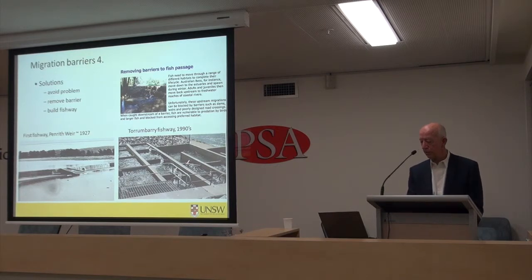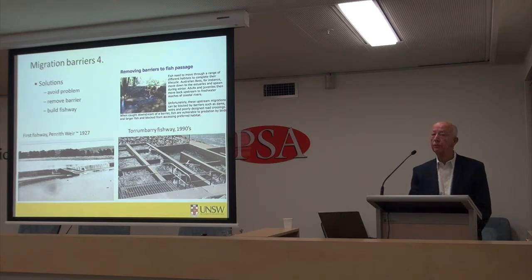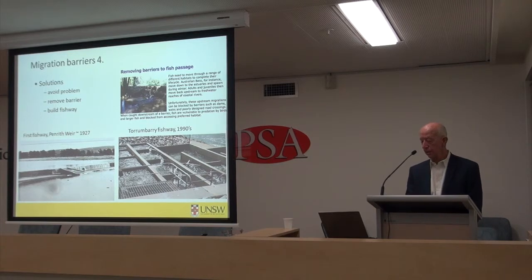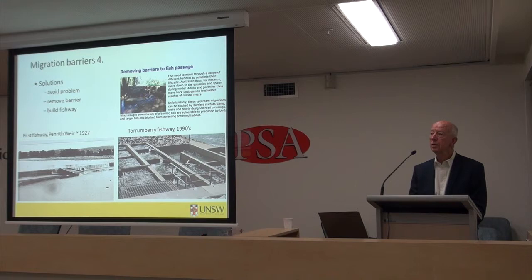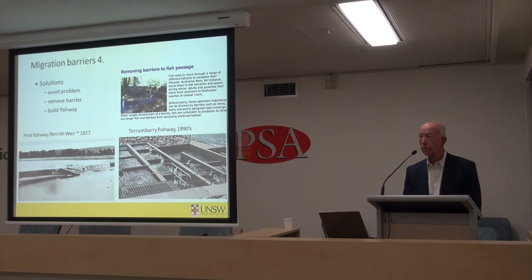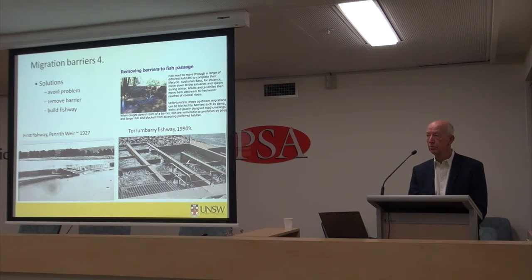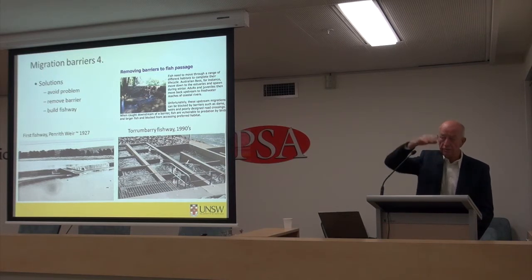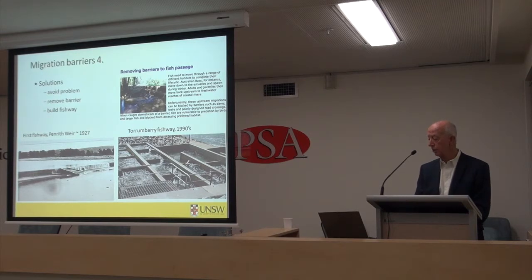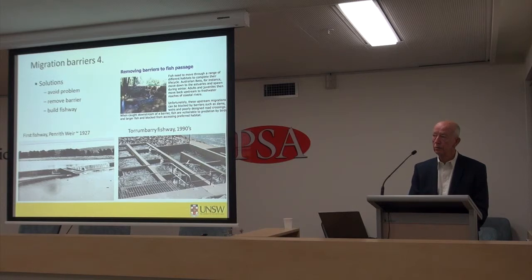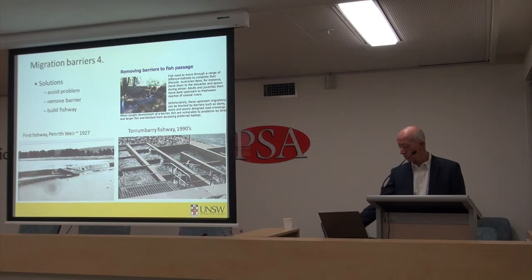As far as I know, the first fishway built in this country was at Penrith Weir in about 1927 — in fact it was the first of four fishways built on that structure with varying degrees of success. That particular simple design was created with very little understanding of the necessary technology — just a simple ramp. But I spoke years ago to an old fisherman who was a regular at that site and he told me he'd seen Australian bass get up on their sides and flap up that barrier in high flows. In the bottom right is a picture of the much more effective vertical slot design fishway on Turumbarray Weir in the middle Murray, which is performing quite well.